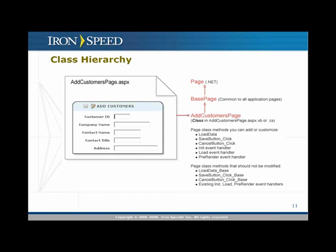For the add customers page we generate a whole bunch of methods, like load data and click handlers for each button. There are certain methods called 'safe methods' — things you are able to change — and others that will be overwritten when the page is regenerated, which we recommend you do not change. Anything with an underscore base suffix is a generated one; we recommend you do not change those. However, you can change anything without that suffix, like load data or save button click.